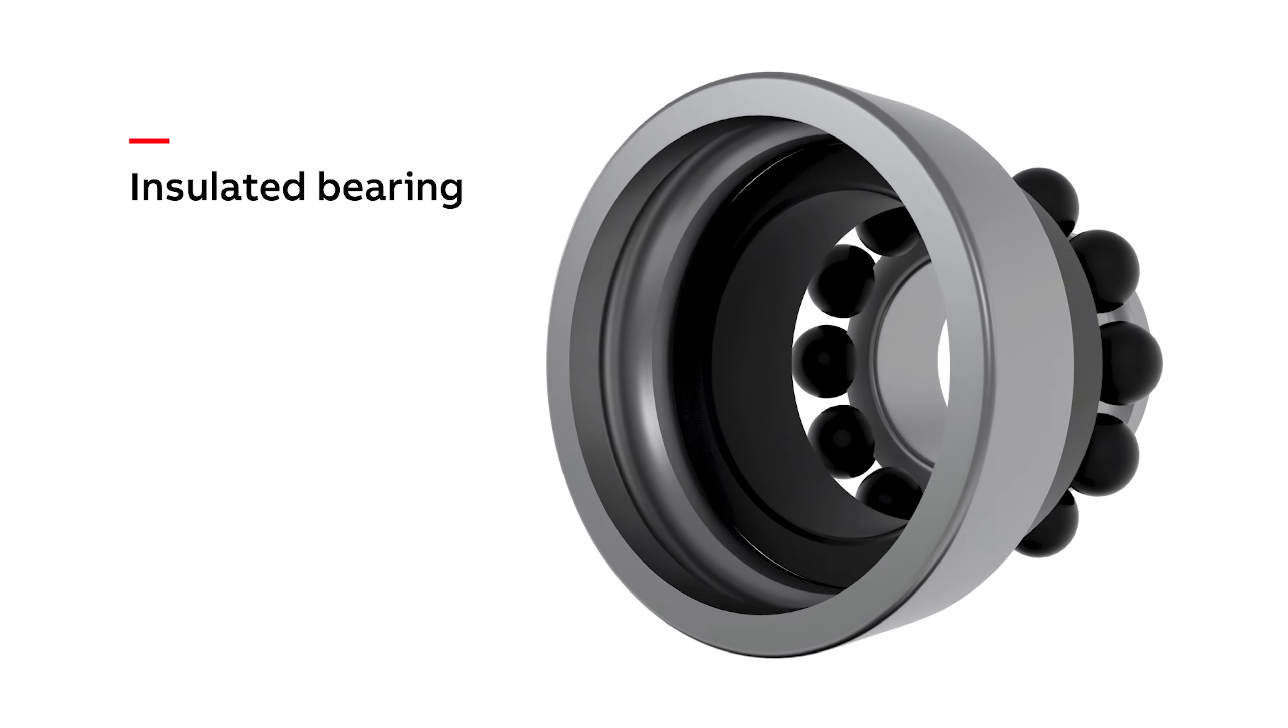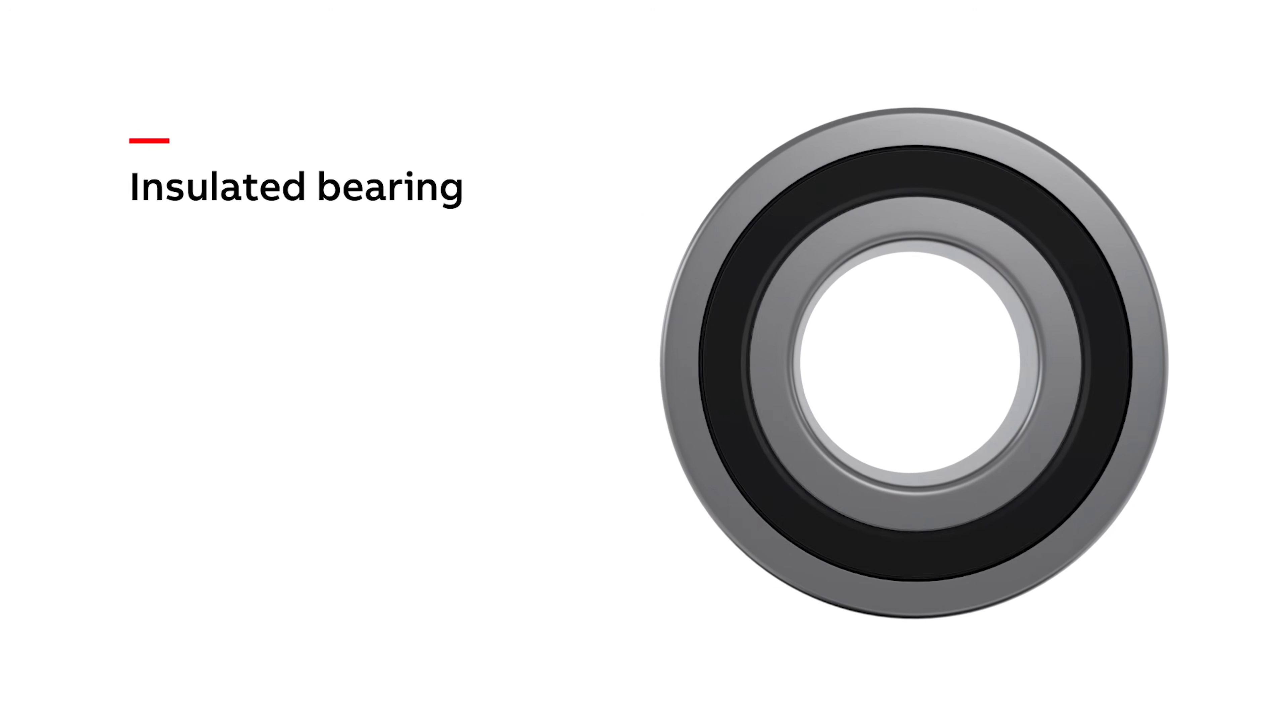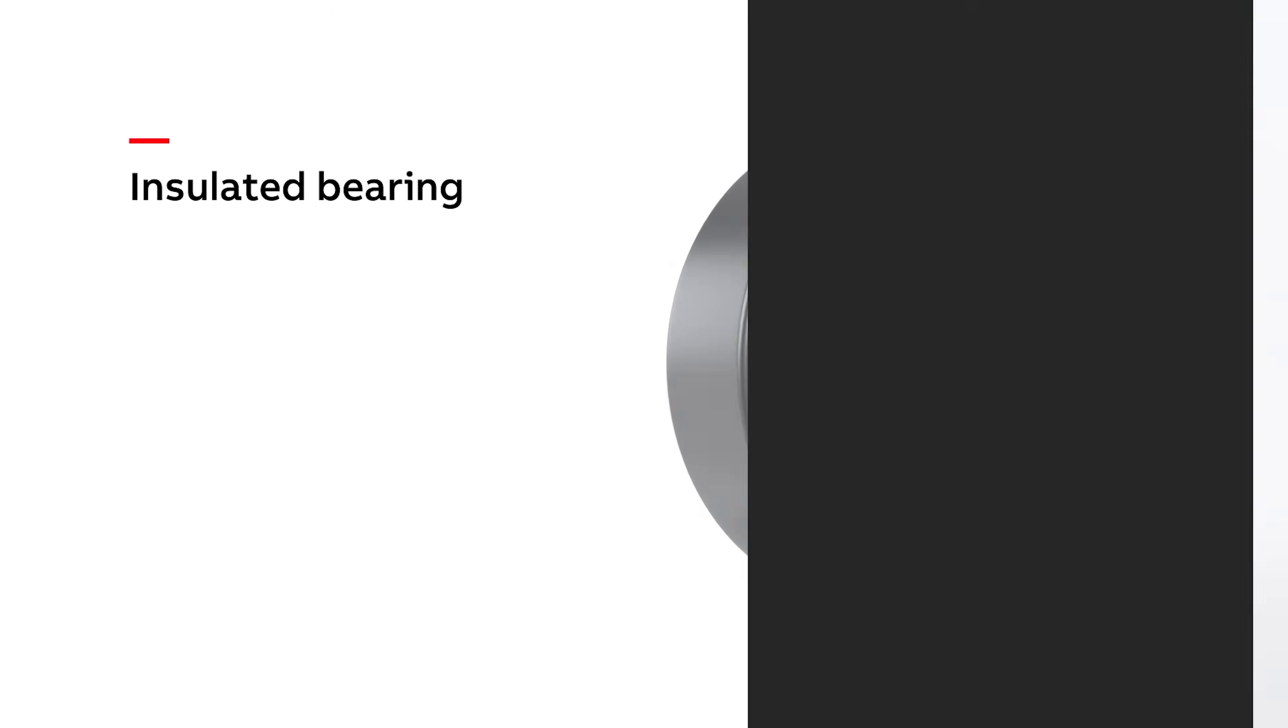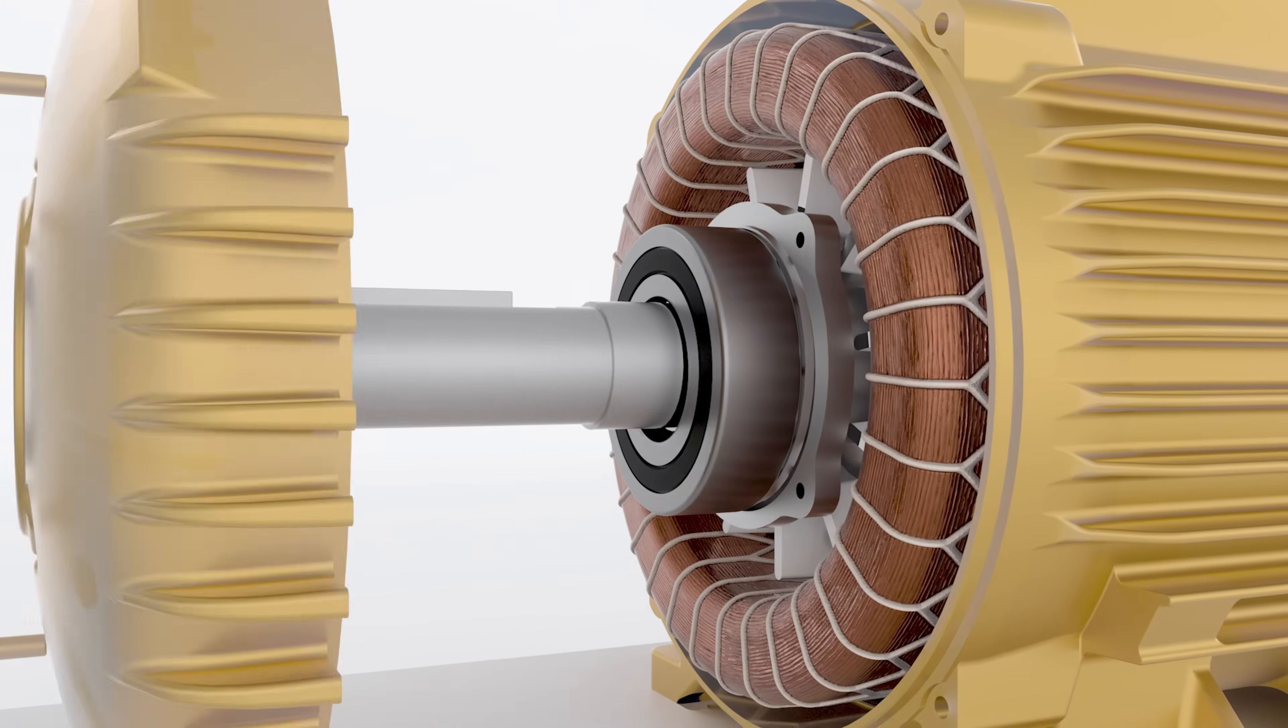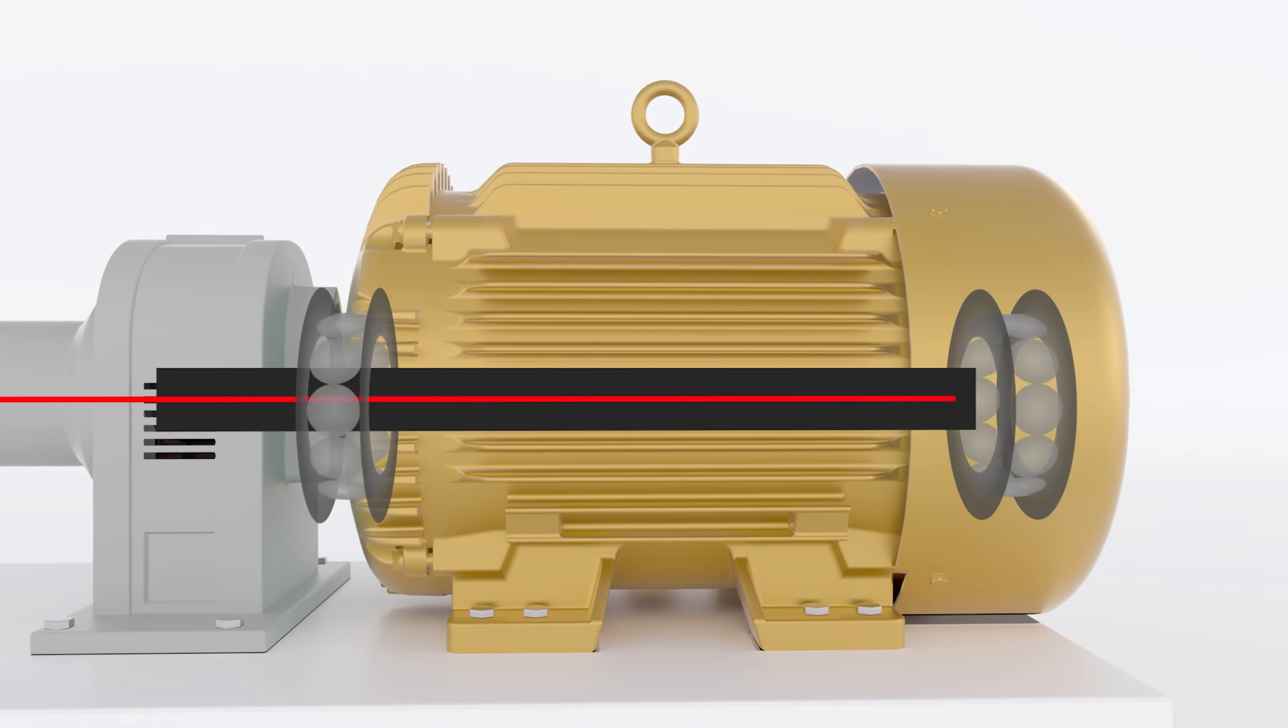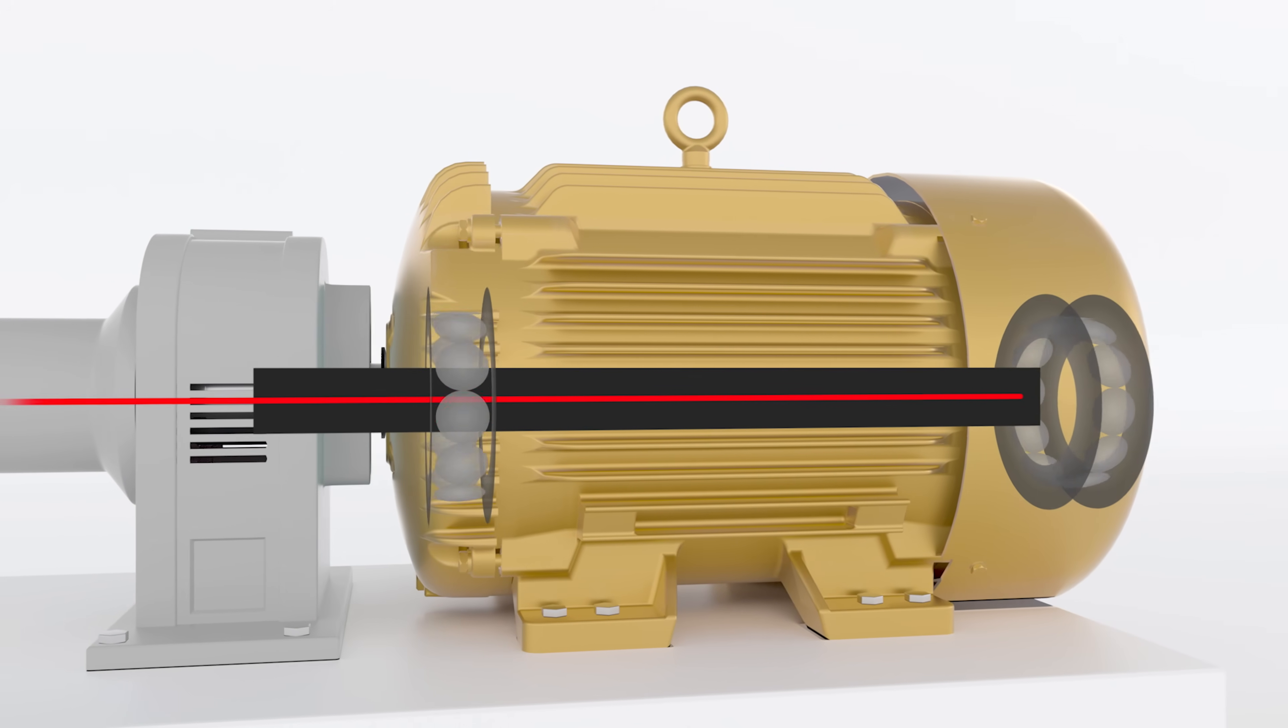Bearings made from an insulated, non-conducting material, such as ceramic, are another solution to eliminate the discharge of current through the bearings. Non-conductive ceramic materials prevent shaft currents from flowing through the bearings and damaging the motor. Since no electrical current flows through the motor bearings, there is no chance of current-induced wear.